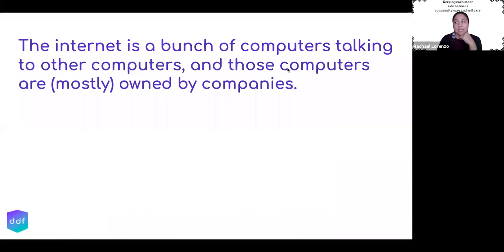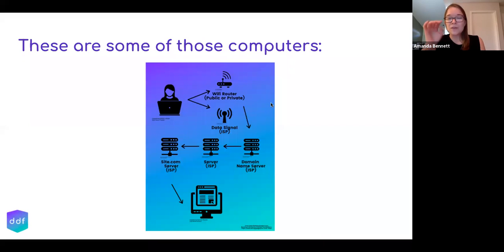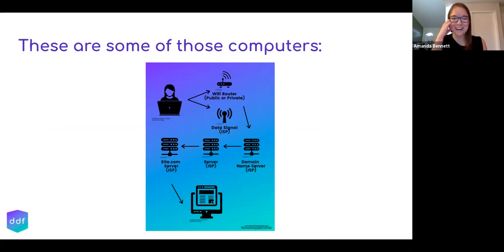Just thinking about cell phone towers too — about where they are located, whose land those were, and how communications companies got permission to build those cell towers. Which brings us to the point that the internet is a bunch of computers talking to other computers, and those computers are mostly owned by companies. These are some of the computers that your computer talks to when you're accessing the internet.